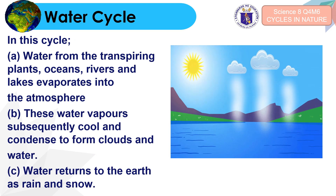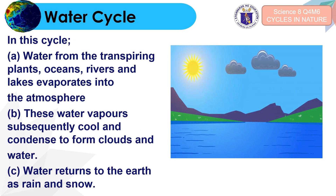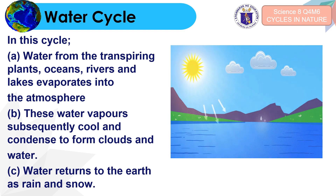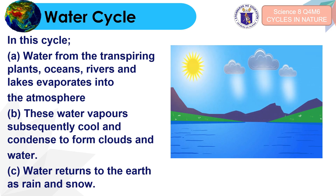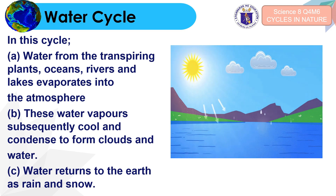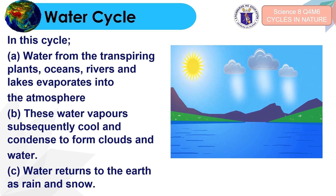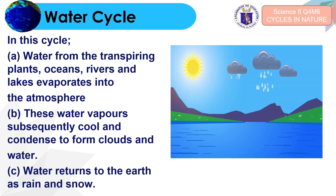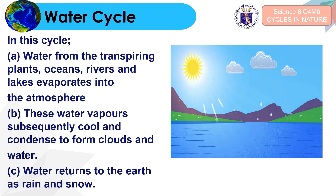How does the water cycle take place? It starts with water from transpiring plants, oceans, rivers, and lakes evaporating into the atmosphere. After evaporation, the water vapor cools and condenses to form clouds and liquid water. This water then returns to the earth as rain and snow through the process of precipitation.